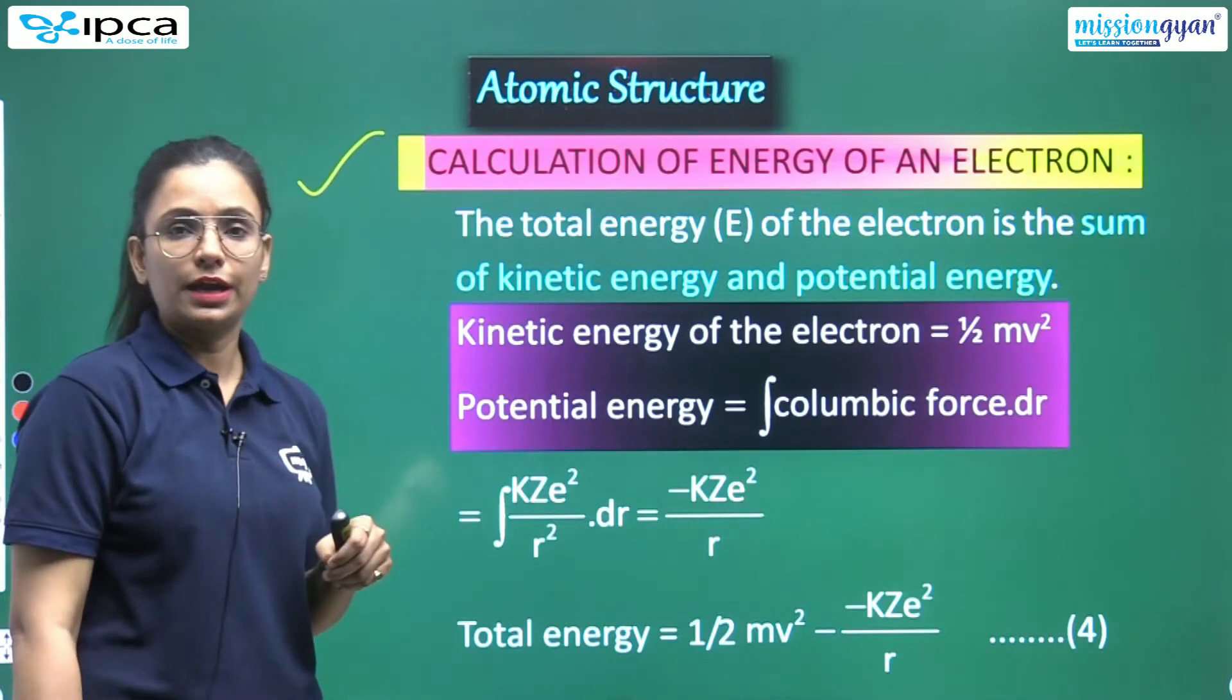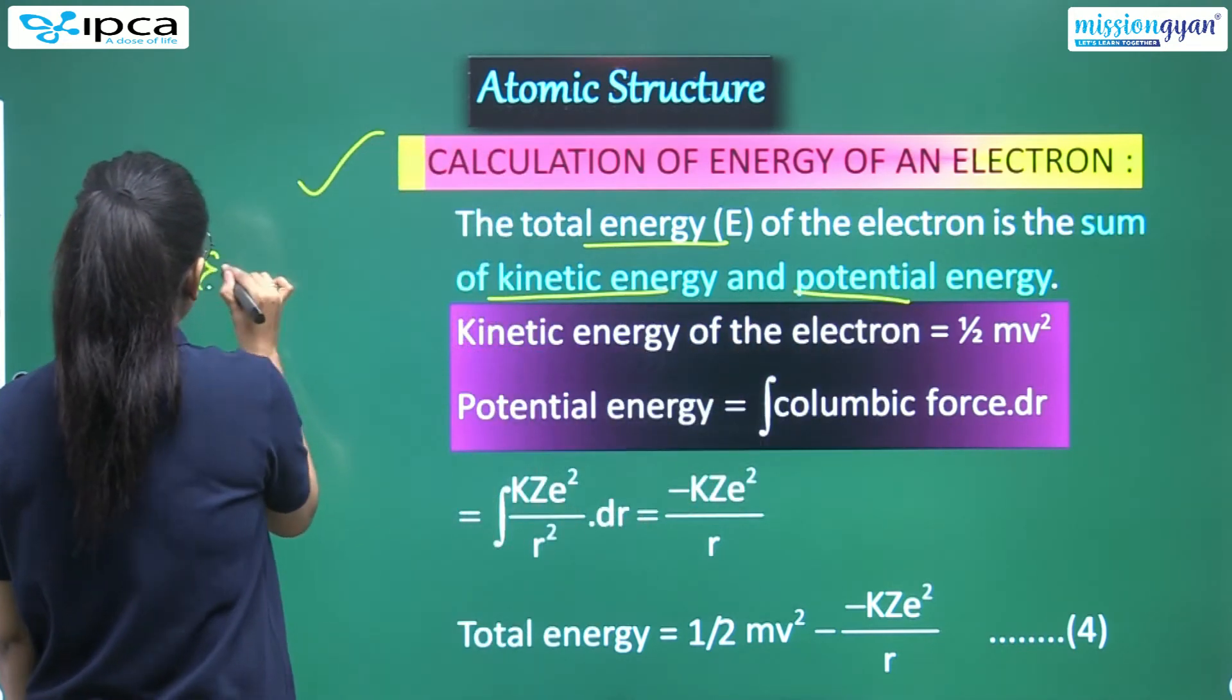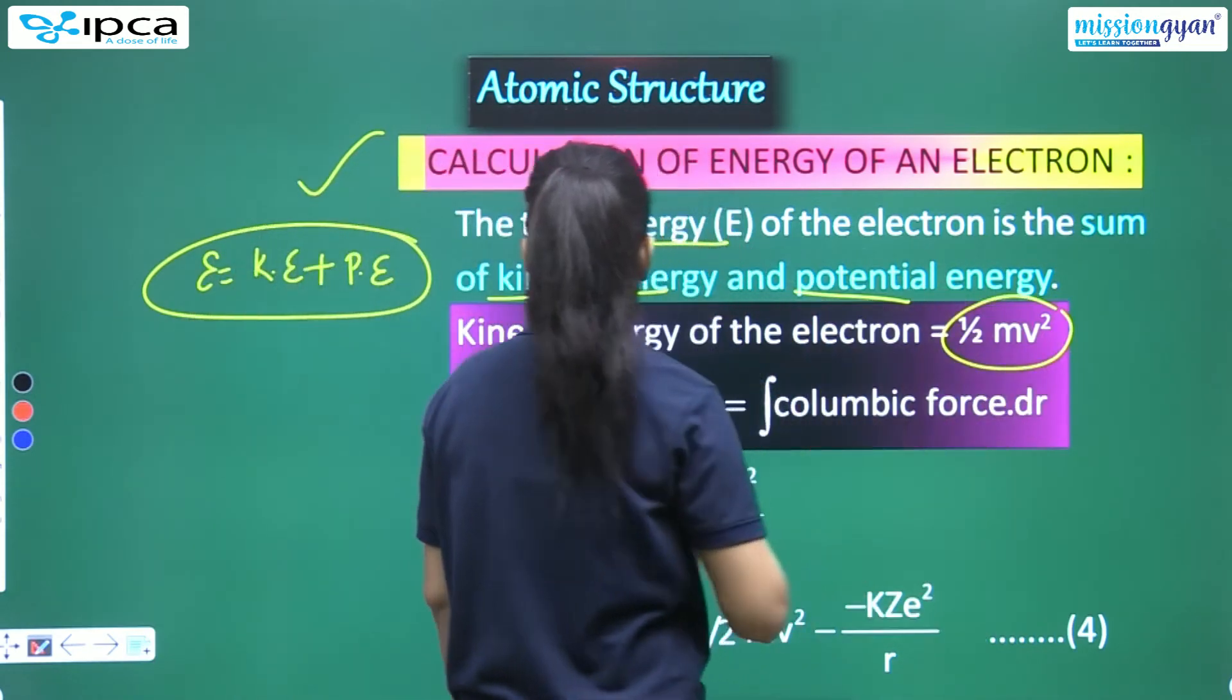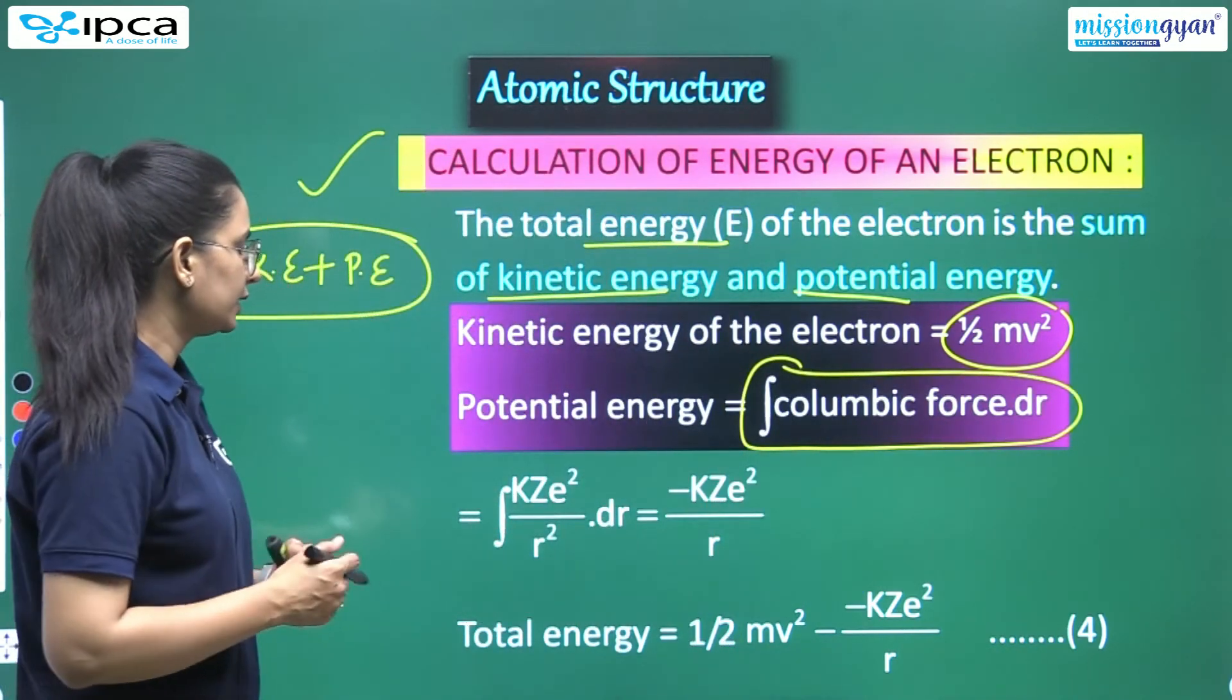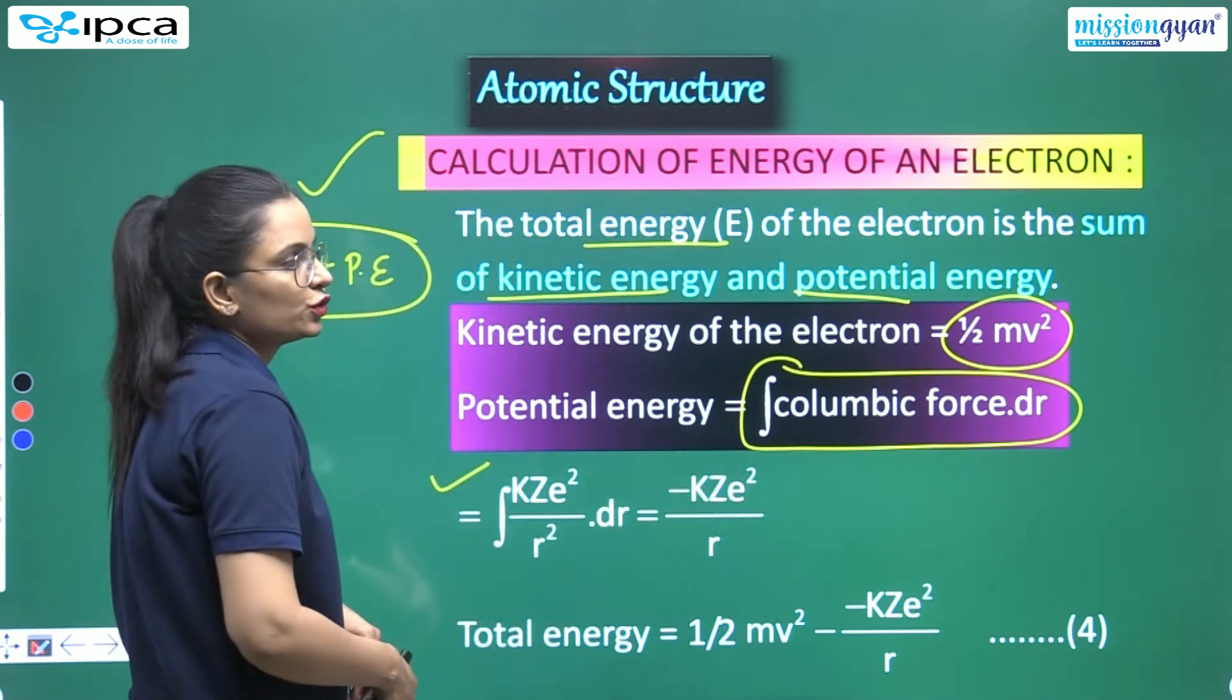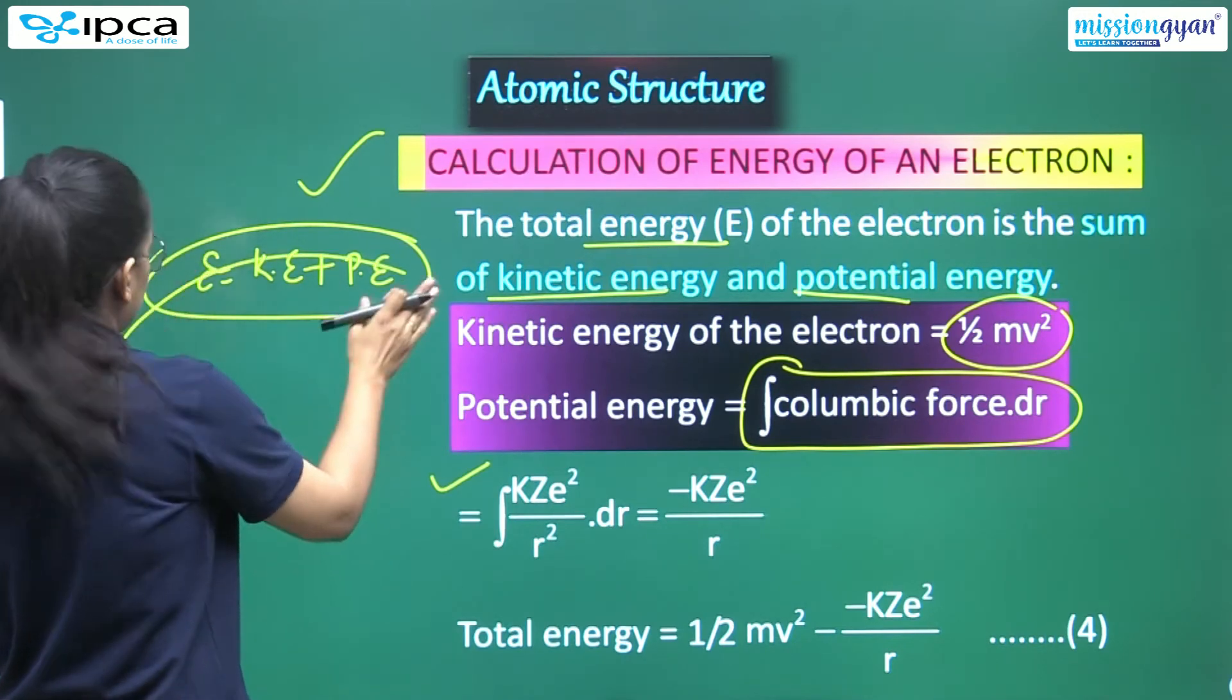Next. Calculation of energy of an electron. Now you've solved that completely. Calculation: the total energy of electron is the sum of kinetic energy and potential energy - KE plus PE. E is equal to KE plus PE. Just need to know the formulas of both - no problem. So what's the kinetic energy formula for electron? Half mv square. And potential energy? Integral coulombic force into distance. So let's put it. KE's value is equals to this. You put Kze square by r square. Differentiate: minus Kze square upon r. Now what will total energy be? If I subtract PE from this - that's what you'll do.